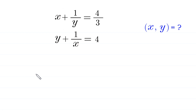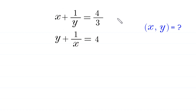Hello everyone, welcome. We are going to solve this system: x plus 1 over y is equal to 4 over 3, and y plus 1 over x is equal to 4. Our job is to find all possible values of x and y. Let's call the first equation equation 1 and the second equation equation 2.